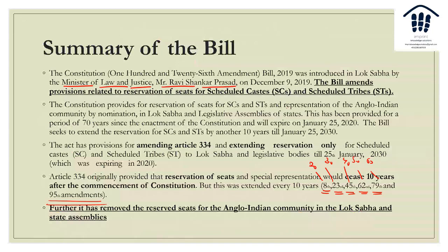The Constitution provides for representation of the Anglo-Indian community by nomination. Very interestingly, what this government has done is that it had nominated members in the previous 2014 term, but it has now removed the seats for the Anglo-Indian community in the Lok Sabha and state assemblies. Very interestingly, this amendment changes the federal nature of the constitution, which requires at least half of the states to ratify it.